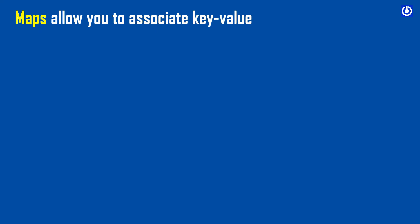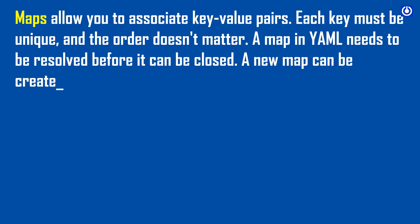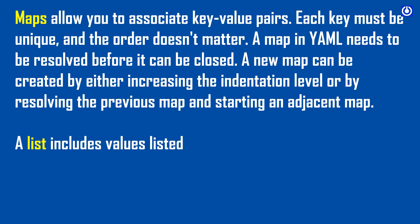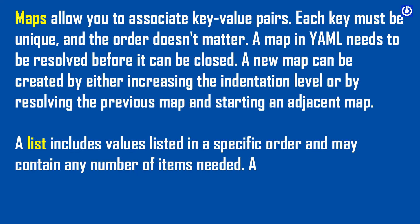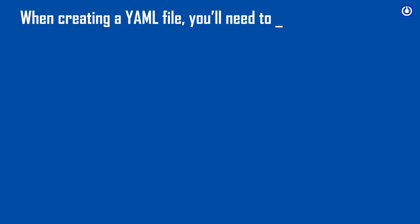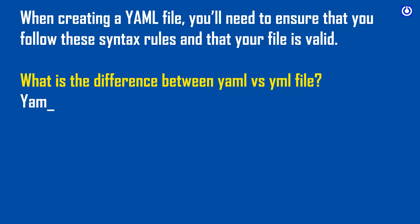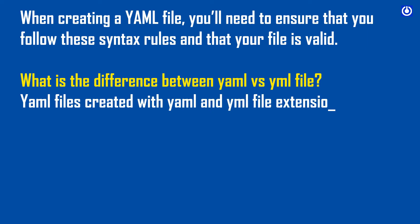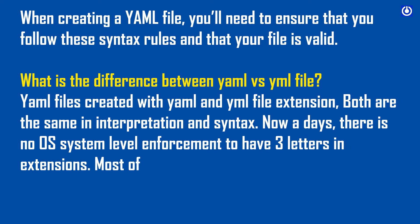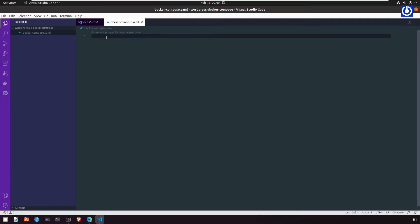YAML syntax has features from Perl, C, XML, HTML, and other programming languages. YAML is also a superset of JSON, so JSON files are valid in YAML. Tab characters are not allowed — whitespace is used instead. There are no format symbols such as braces, square brackets, closing tags, or quotation marks. Maps allow you to associate key-value pairs where each key must be unique. A list sequence starts with a dash and a space. Both `.yml` and `.yaml` extensions are interpreted identically; most users prefer `.yaml`.